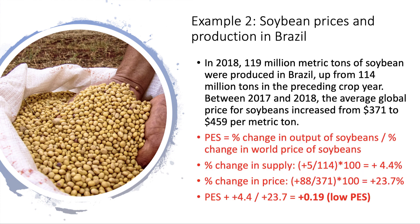As always, put the formula in at the start of the answer — if you get into the habit of doing this, you'll pick up those credit marks all the way through an exam and you'll find your grade is higher. Elasticity in this case is the percentage change in the output of soybeans divided by the percentage change in the world price of soybeans. The change in supply is plus five divided by the original 114 times 100 — that's plus 4.4 percent.